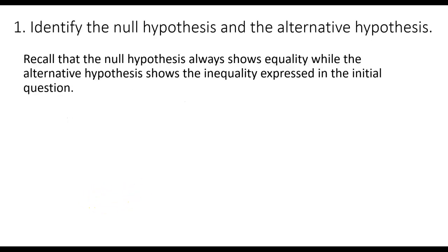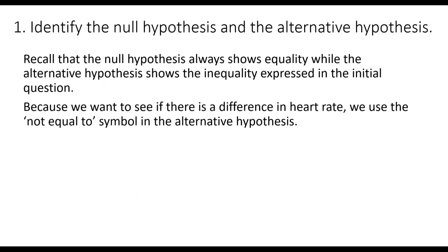Identify the null hypothesis and the alternative hypothesis. Well, first, let's recall that the null hypothesis always shows equality, while the alternative hypothesis shows the inequality expressed in the initial question. Because we want just to see if there is a difference in heart rate, we will use the not equal to symbol in the alternative hypothesis. So our null hypothesis will be mu sub 1 equals mu sub 2, and the alternative hypothesis will be mu sub 1 is not equal to mu sub 2. Remembering that the first sample is the old exercise program, whereas the new sample is the cardiovascular exercise program.